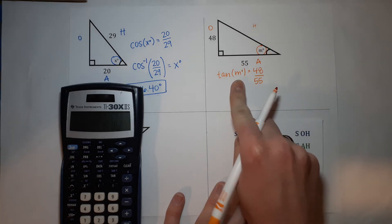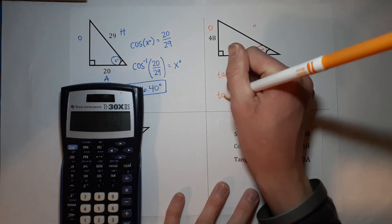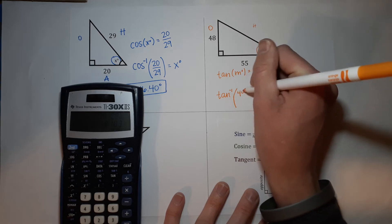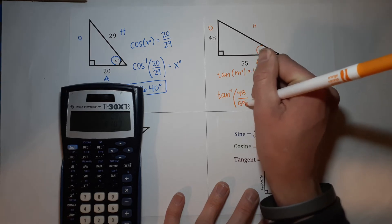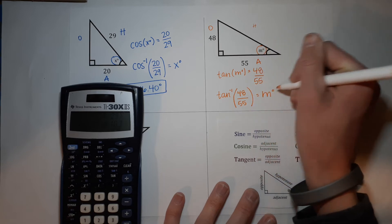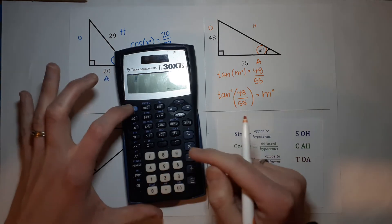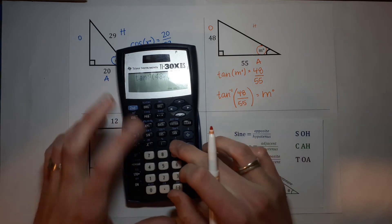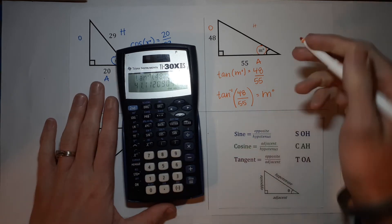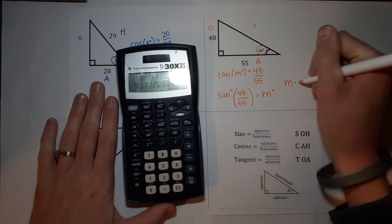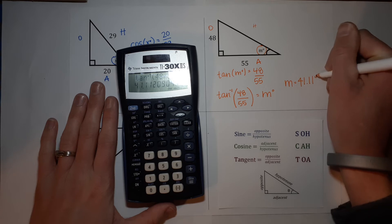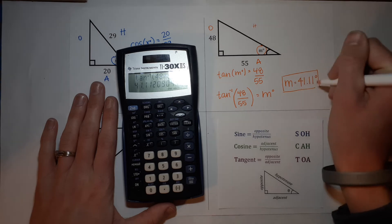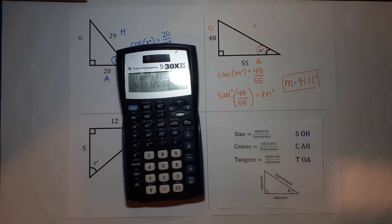We're looking for the angle, so I'm going to use the inverse. So the tangent with our cute little negative one up there of 48 over 55 is equal to M degrees. Again, I'm just going to put that in here. I hit second tangent, that gives me the inverse tangent of 48 over 55. I'm going to round two decimal places, so I get 41.11 degrees.